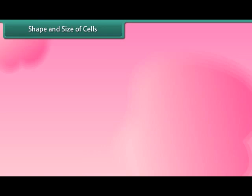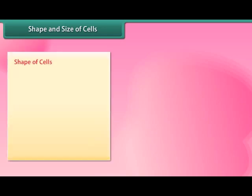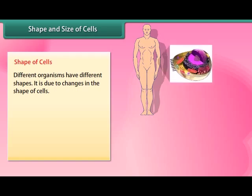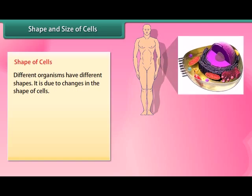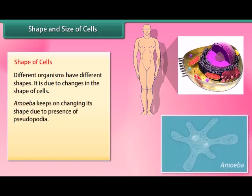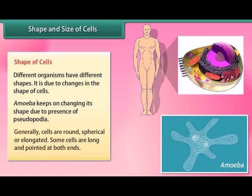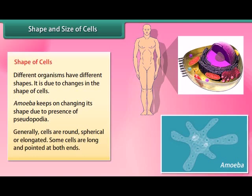Different organisms have different shapes due to changes in the shape of their cells. Amoeba keeps changing its shape due to the presence of pseudopodia. Generally, cells are round, spherical, or elongated. Some cells are long and pointed at both ends.